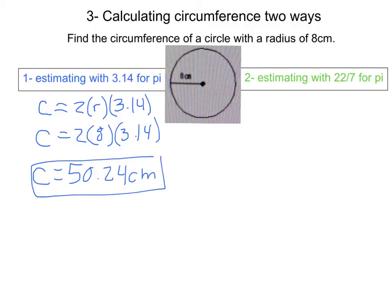It's important to know this is approximate, because pi is a number that goes on forever. Although we're rounding it to 3.14, it is actually an unending number: 3.14159... and it goes on infinitely. So by approximation, we know this is about 50.24 centimeters, but it could be something slightly more.